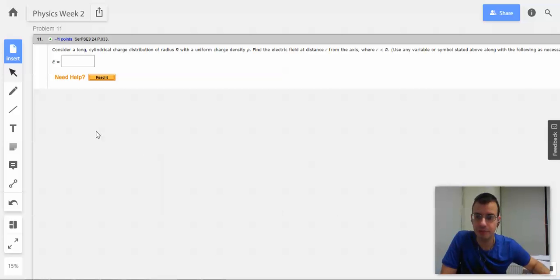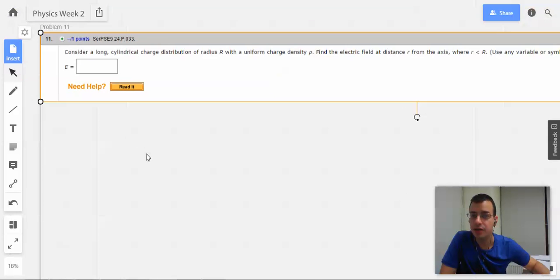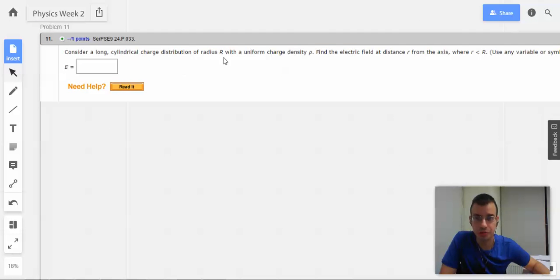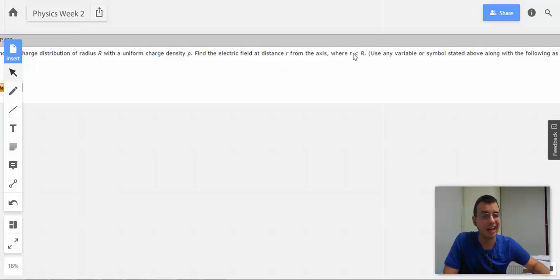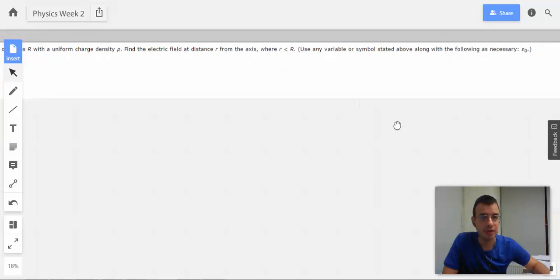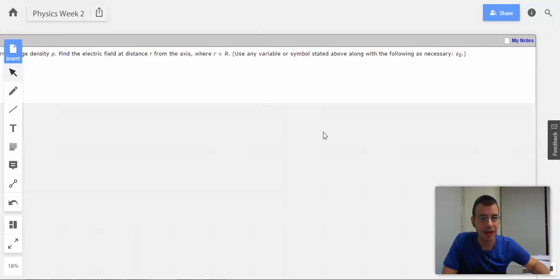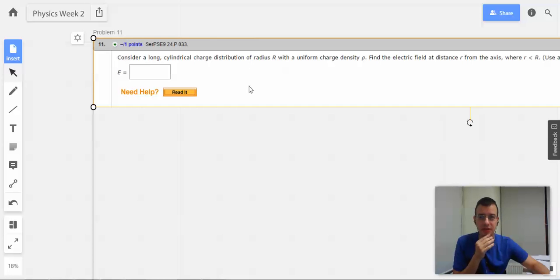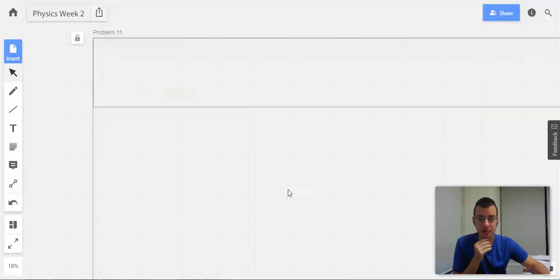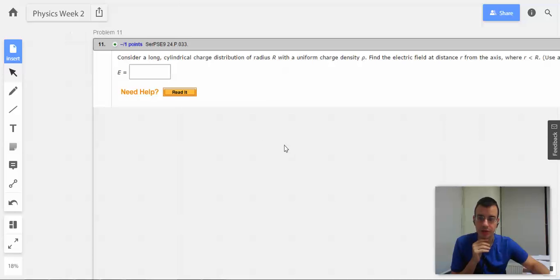Coffee's good. All right, problem 11: Consider a long cylindrical charge distribution radius R with a uniform charge density rho. Find the electric field at a distance r from the axis, where r is less than big R. Use any variable or symbol stated above along with the following as necessary: epsilon naught. Okay, so this feels like Gauss's law, so I'm going to start with Gauss's law and see where this leads us.